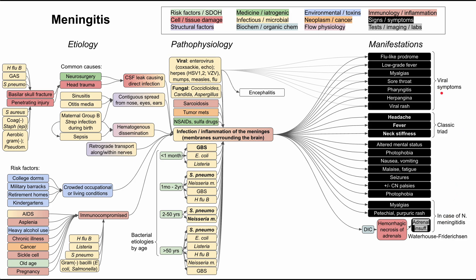There are some symptoms you might expect to see specifically in viral meningitis. This includes a flu-like prodrome — congestion, sore throat, low-grade fever, muscle aches, pharyngitis, herpangina (red or white spots at the back of the throat), and a viral rash. You might get these symptoms along with a meningoencephalitis picture in viral causes of meningitis.